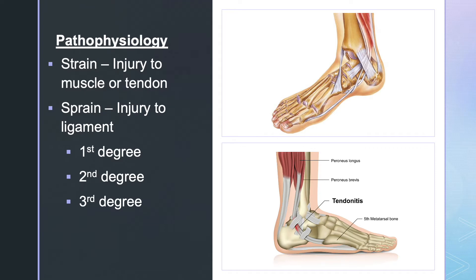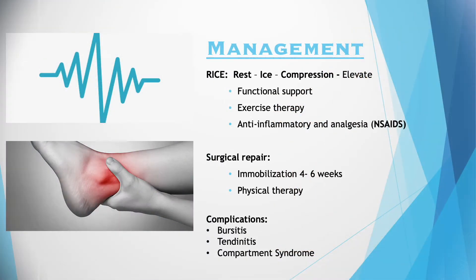For sprains, a first degree sprain is categorized by minimal pain and tearing of a ligament. A second degree sprain demonstrates even more tearing in a ligament with even more pain. A third degree sprain is complete tearing of a ligament. With all of these sprains, edema will be manifested, which can cause complications known as bursitis and tendonitis — inflammation of the tendon, as seen in the image.